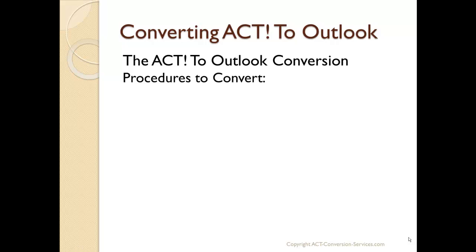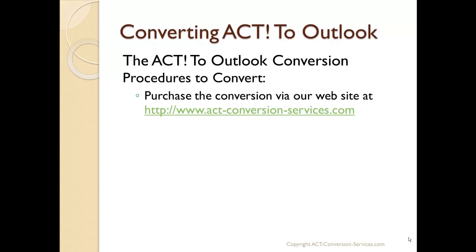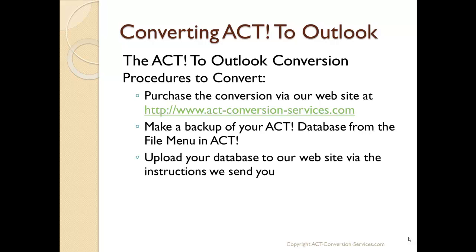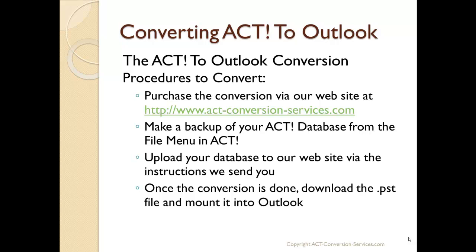So where do we go from here? How do you convert your ACT database to Outlook? First, you purchase the conversion, which starts the whole process. We send you an email with instructions — basically, to make a backup of your ACT database from the file menu: go to File, Backup Database, back it up, and you get a zip file. Then, from the email we send you, you're given a link to upload the data to our site — just use that link and upload the zip file. We receive it, convert the data, and then provide you with a link to download your Outlook PST along with instructions on how to mount it into Outlook.